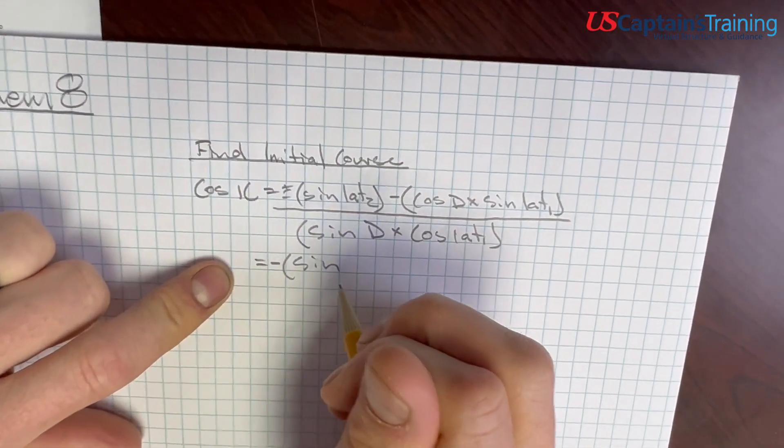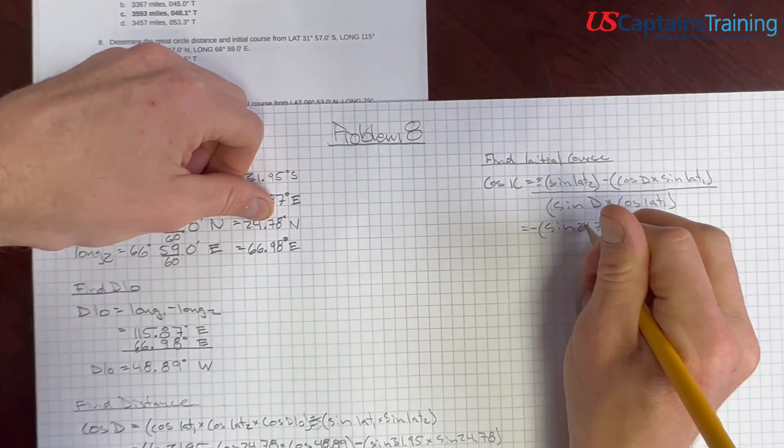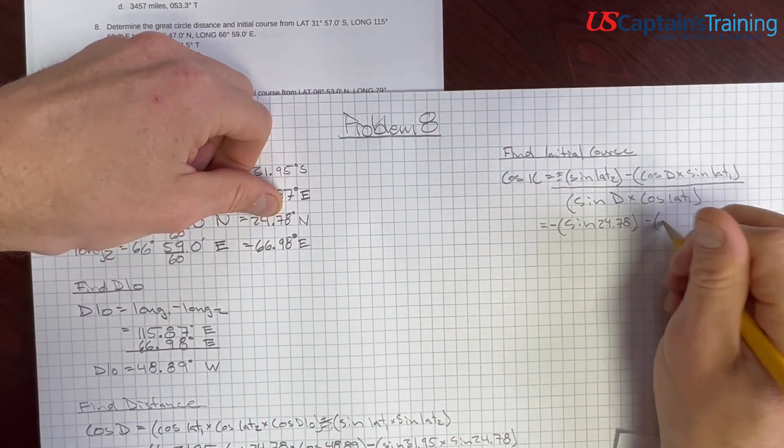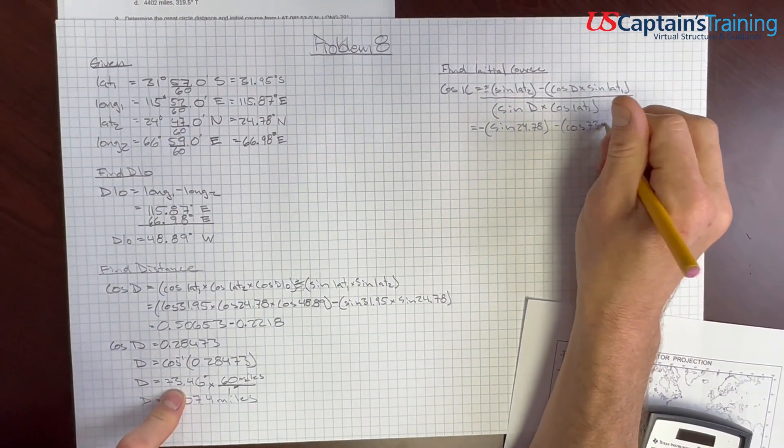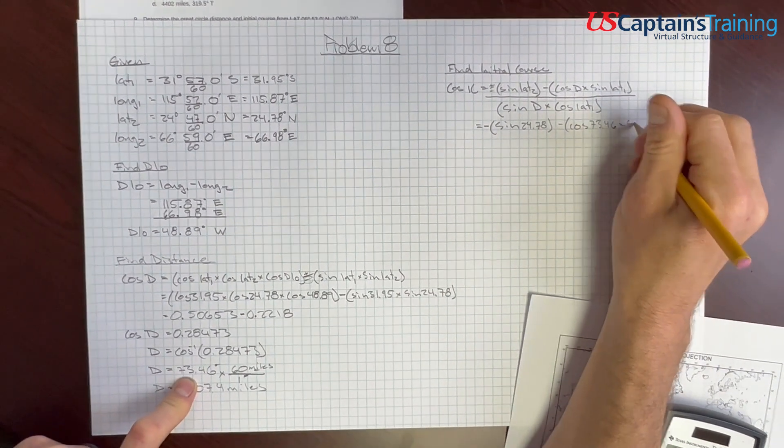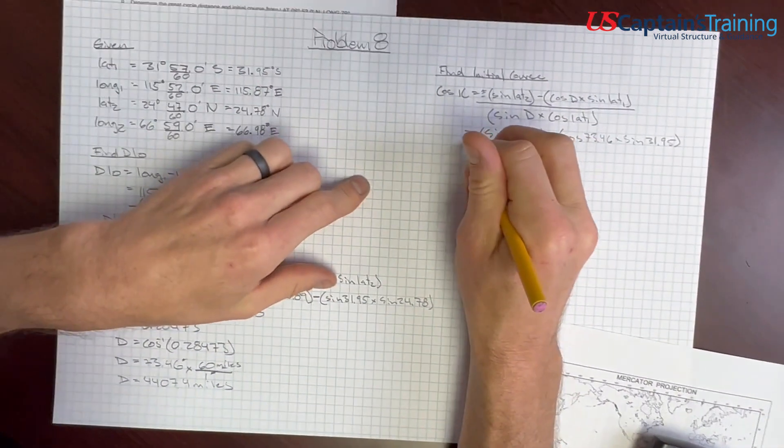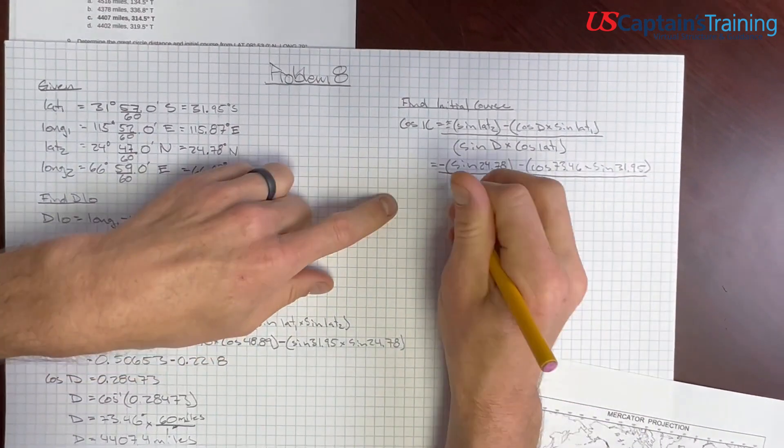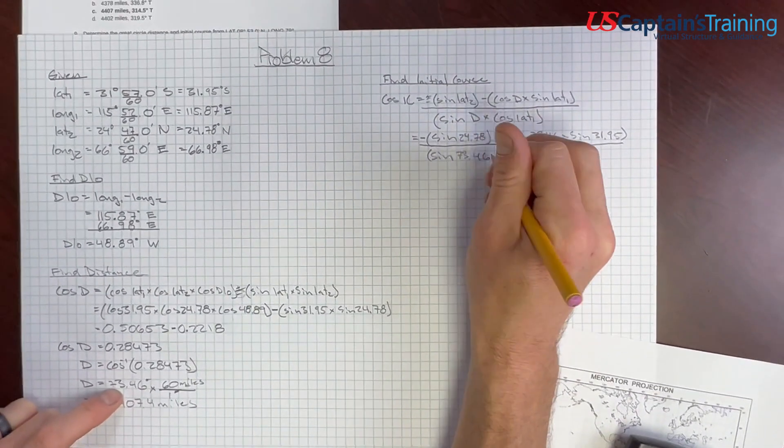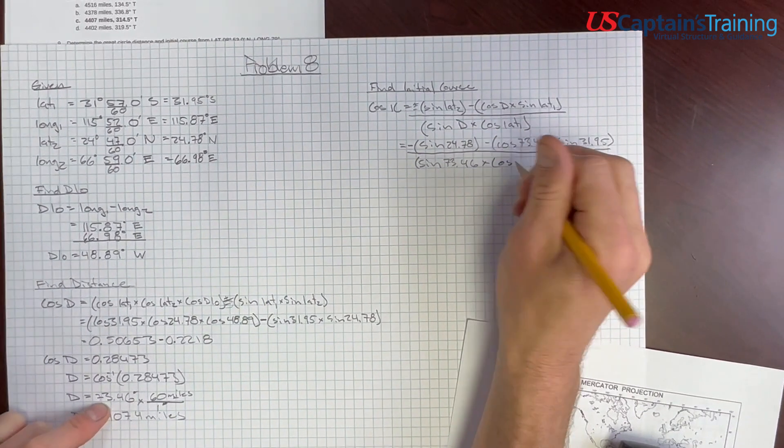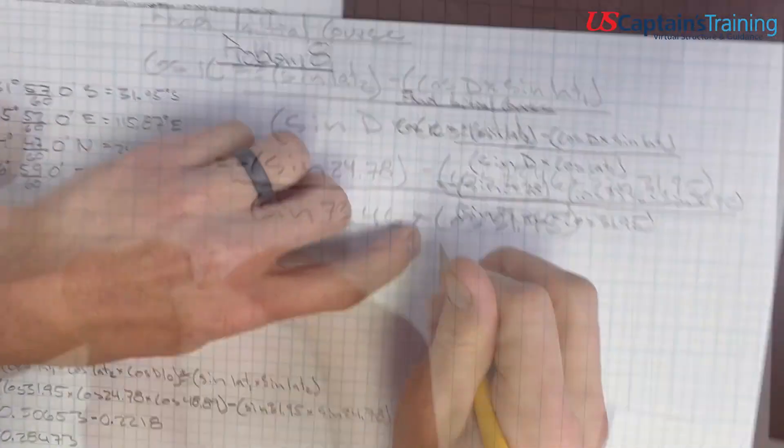So, we say minus. Sine lat 2. What's sine lat 2? Lat 2, 24.78. Minus. Cosine distance, don't use your miles. 73.46 degrees times sine lat 1 again, 31.95. All of this is over the sine of the distance, which is 73.46 degrees, times the cosine lat 1, 31.95. All right. Let's keep crunching. Don't forget this negative sign.